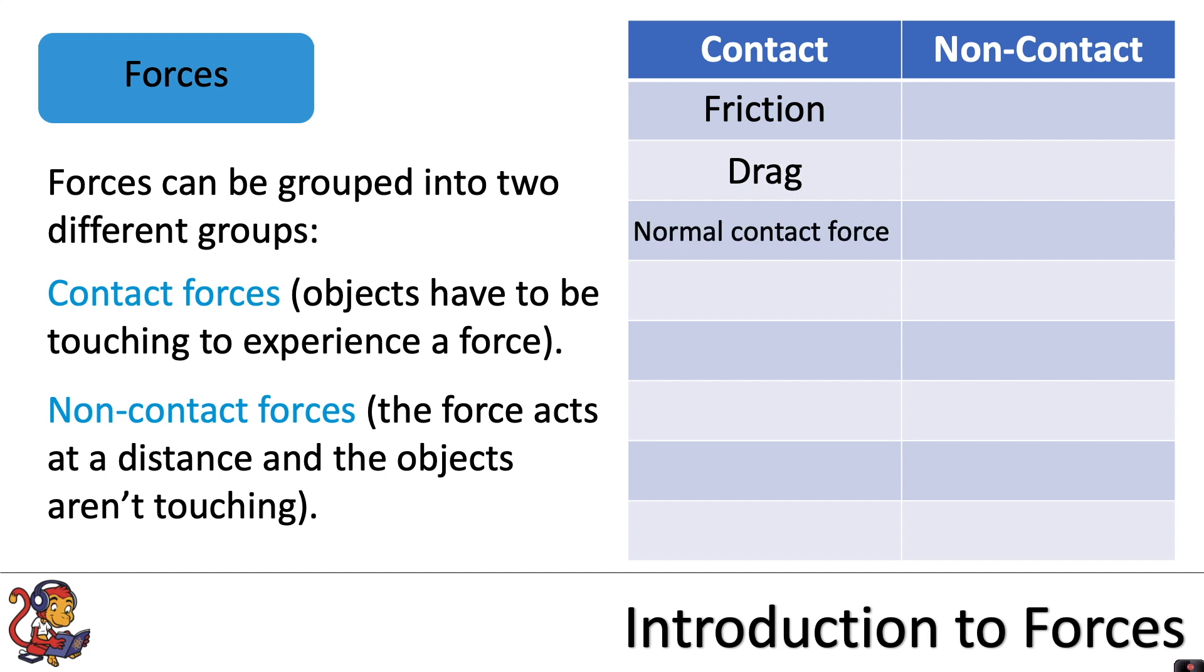A normal contact force, this is a force that acts at 90 degrees when two objects are touching. Up thrust, this is a force experienced in water as the water particles push upwards on an object. Air resistance, which is a force experienced when air particles push back on an object.